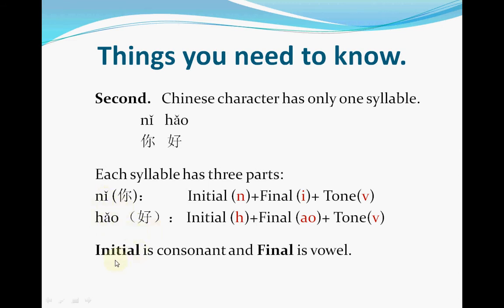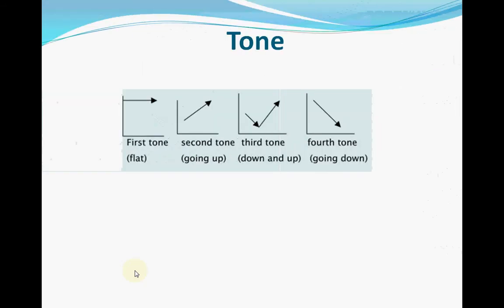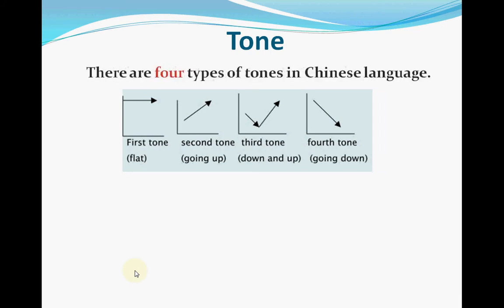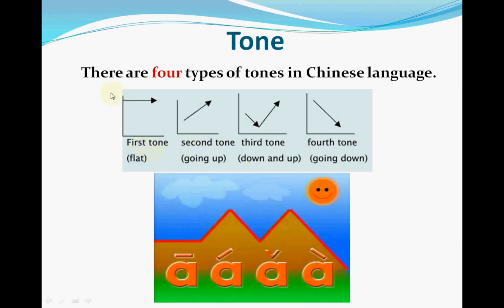So you may notice that the initial is a consonant and the final is a vowel. Now let's move on to tone. There are four types of tone in Chinese. The first tone you pronounce flat. The second tone goes up. The third tone goes down then up. The fourth tone goes down. Let me take 'a' as an example to pronounce all four tones: ā, á, ǎ, à. See, they are totally different, right?